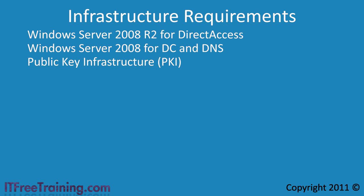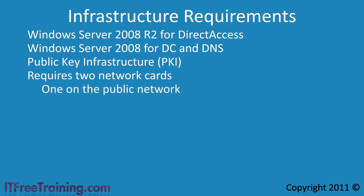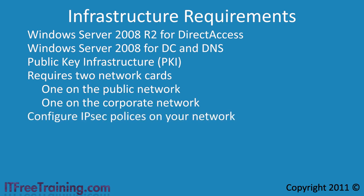If you have all this on your network, you are also going to need to install a second network card on the server on which you want to run direct access. One network card is used to access the public network while the other is used to access the corporate network. As you can see, there is a lot of infrastructure required. Once all this infrastructure is in place, you next need to configure your IPsec policies and IP version 6 transition technologies.